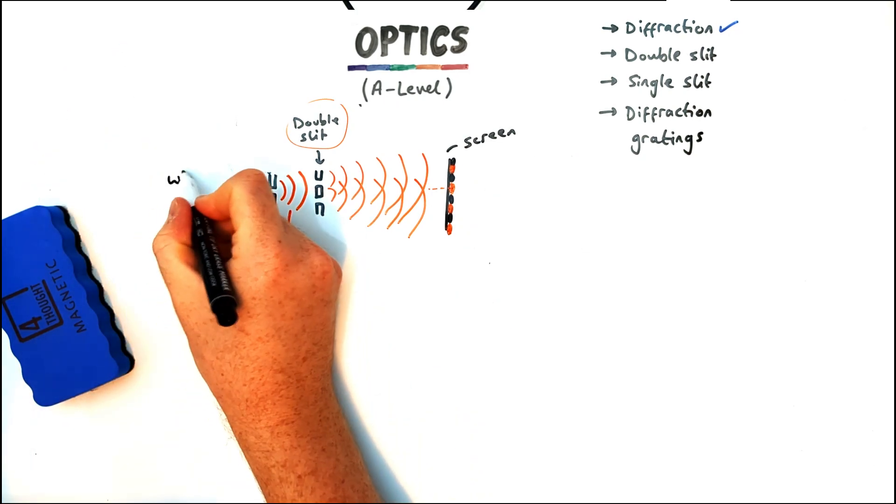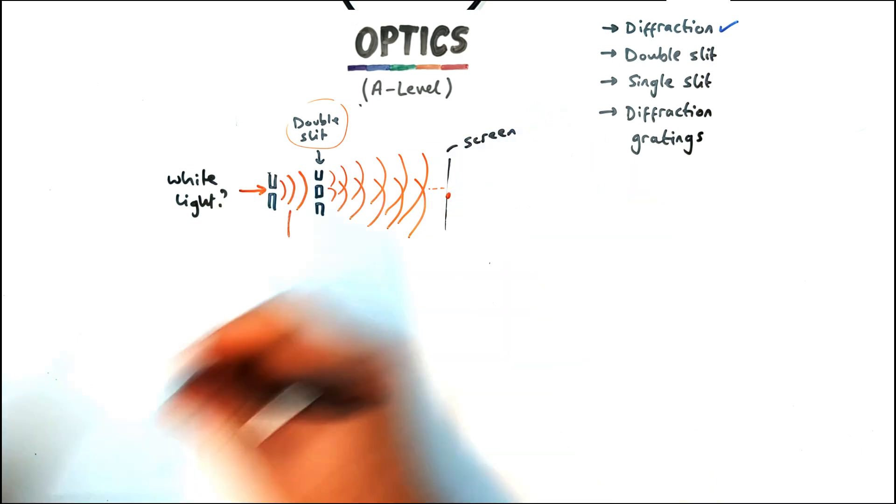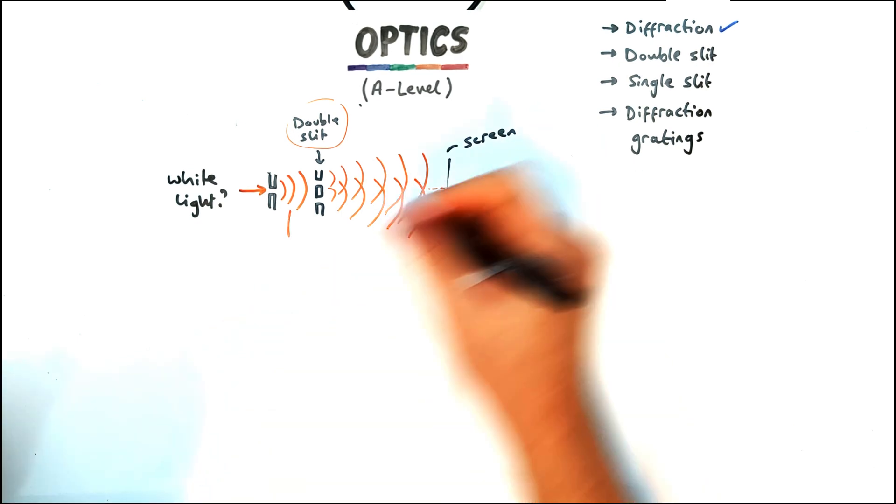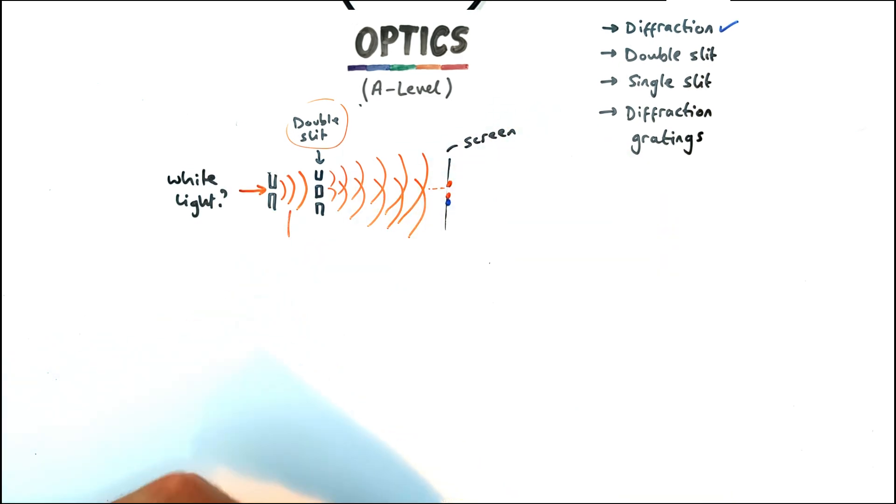So let's have a look next then at how we can use that equation to understand what happens when we have different types of lights going into our double slit. So what about instead of monochromatic light if we had white light which is made up of all the colours.